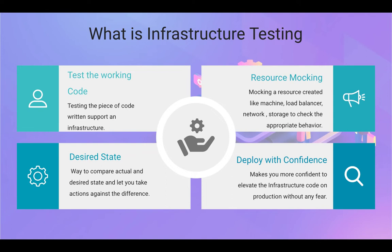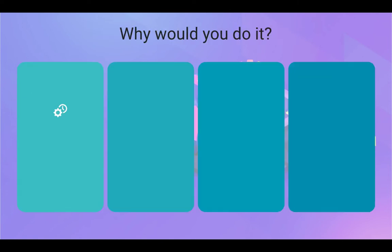Infrastructure testing can also be used to compare your actual and desired state. In between deployments, users, developers, or administrators may leave a mismatch between actual and desired state while debugging, which can leave vulnerabilities open. Deploy with confidence: if you have three environments — dev, non-prod, and prod — and you're running automated tests after each, you can be pretty confident that your infrastructure as code is secure and you're deploying what you intend to deploy without any glitches.